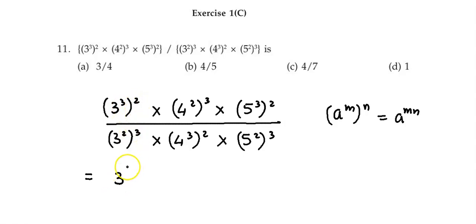3 times 2 that is 6, times 4 raised to 2 times 3 again that is 6, times 5 raised to 3 times 2 that is 6, divided by in the denominator we have 3 raised to 6, times 4 raised to 6, times 5 raised to 6.